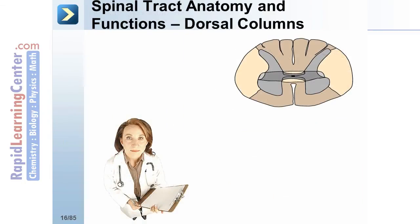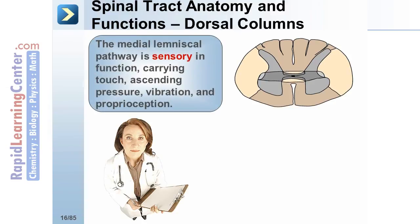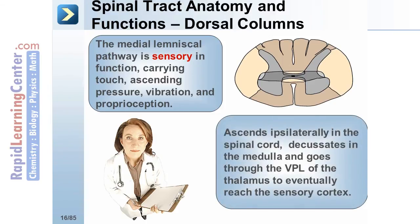Now let's look at the structure and function of the spinal cord. There are three basic spinal tracts to discuss. The first are the dorsal columns. The medial lemniscal pathway is sensory in function, carrying touch, ascending pressure, vibration, and proprioception. It ascends ipsilaterally through the spinal cord, decussates in the medulla, and goes through the VPL of the thalamus to eventually reach the sensory cortex.